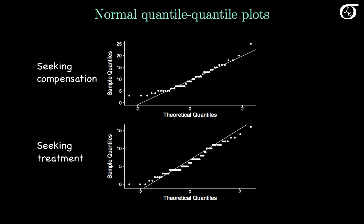Here are the normal quantile-quantile plots for the two groups. The points lie in an approximately straight line if the data is approximately normally distributed. That outlier in the compensation group appears here again, but it's not too dramatic. One could argue there's a little curvature, but as we saw in the box plots, it's not too extreme. With sample sizes of 49 and 70, the t procedure works well as long as the samples are not very strongly skewed. So these are reasonable enough, and with adequate sample sizes we can go ahead and use the pooled variance t procedure.